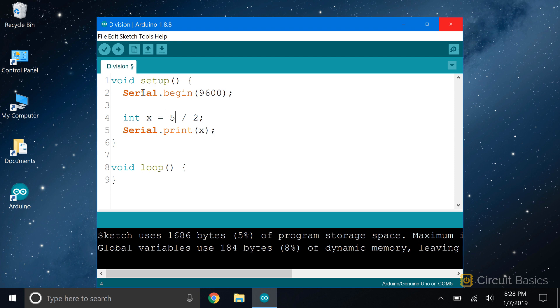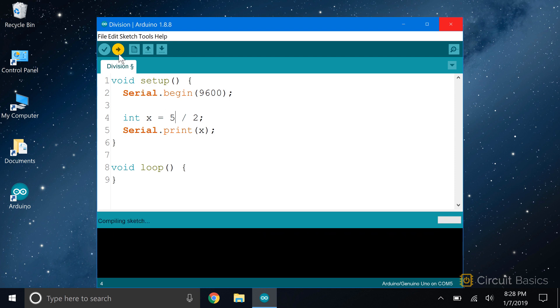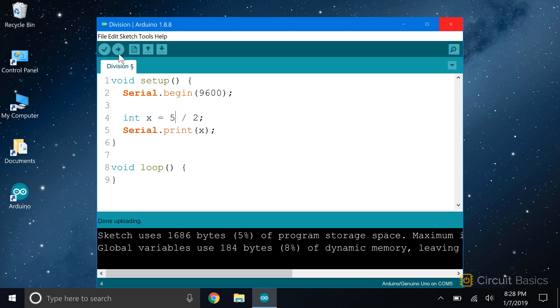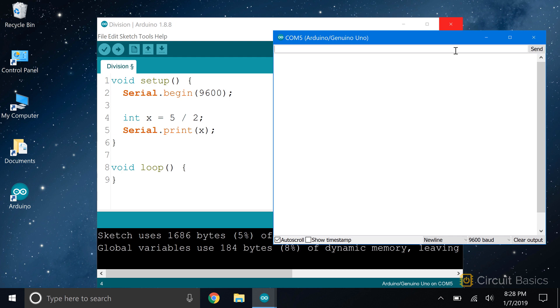But what if we want to divide 5 by 2? We all know that the answer should be 2.5, right? But it's giving us a 2. The problem is that we declared x with the integer data type. Int only works with whole numbers, so the remainder is lost.